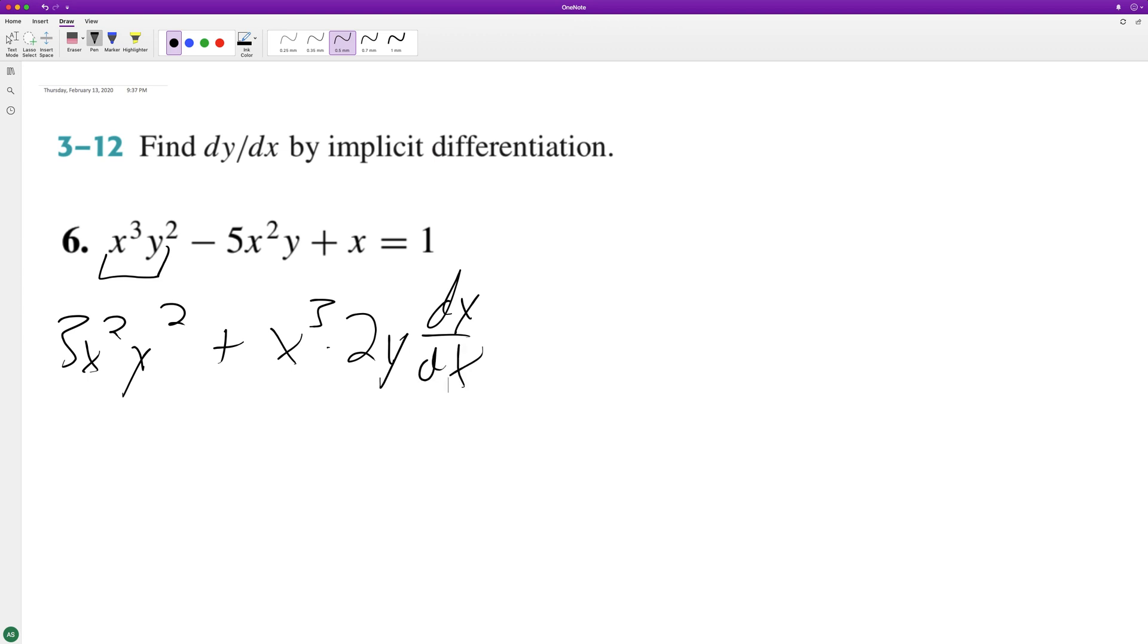Minus 5 times 2, put on the 2, so 10xy plus 5x squared dy dx plus 1 equals 1 or equals 0. All right, separate out the x and y components.